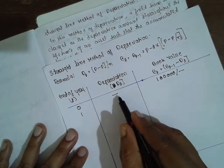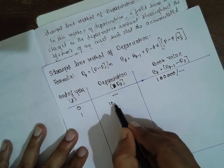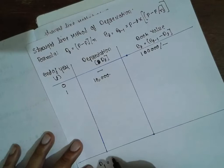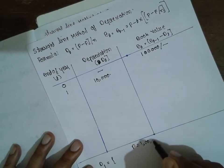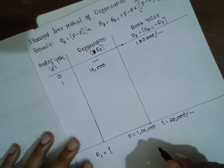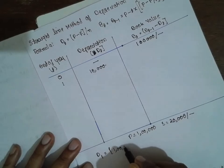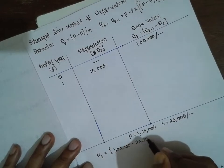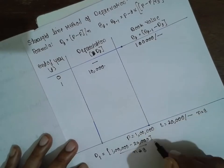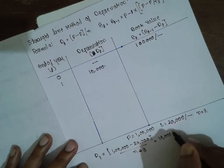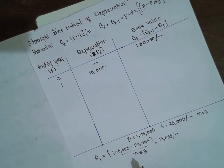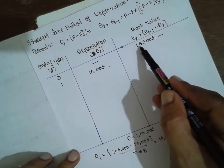For year 1: D1 = (P − F) / N = (1,00,000 − 20,000) / 8 = 10,000. The depreciation charge is Rs. 10,000. Subtracting 10,000 from the opening book value of 1,00,000, we get a book value of Rs. 90,000 at the end of year 1.